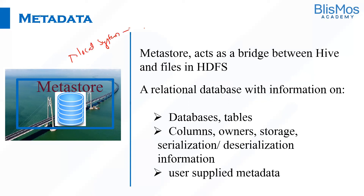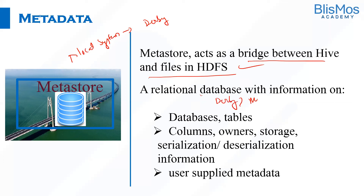We can also set where the metastore should be in hive-site.xml. By default, the metastore is on the local system in Derby. The metastore acts as a bridge between Hive and files in HDFS. Any relational database like Derby or MySQL can be made as a metastore. It usually has information on databases, tables, columns, owners, storage, serialization and deserialization information of the data, and any metadata supplied by users.